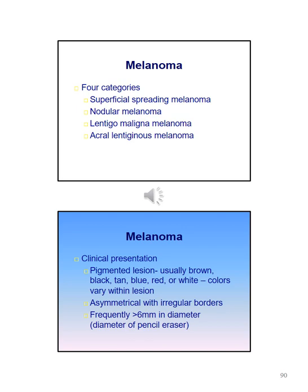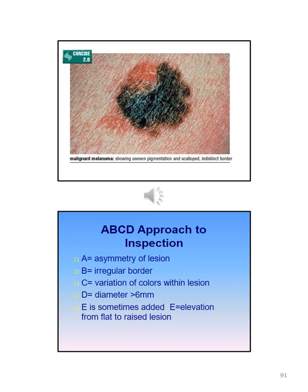Signs and symptoms of melanoma include a pigmented lesion usually brown-black, tan, blue, red, or white, with colors varying within the lesion. There is usually an asymmetrical shape with irregular border. The ABCD approach helps inspection of a nevus: A for asymmetry, B for irregular border, C for variation of colors within the lesion, D for diameter more than six millimeters, and E which may be added for elevation from flat to a raised lesion.